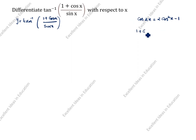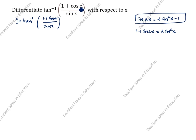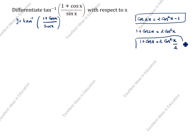From the identity, 1 plus cos 2x is equal to 2 cos square x. We need only 1 plus cos x, so replacing 2x with x: 1 plus cos x is equal to 2 cos square (x/2). These two come to the denominator, so 1 plus cos x equals 2 cos square (x/2).